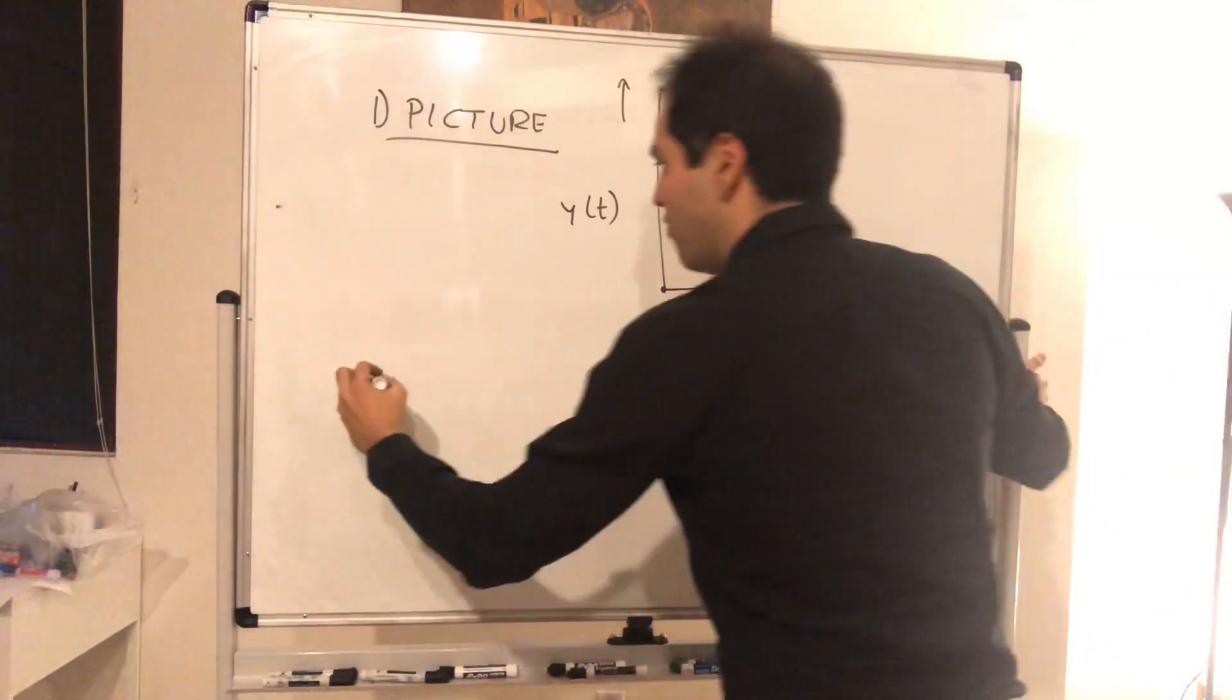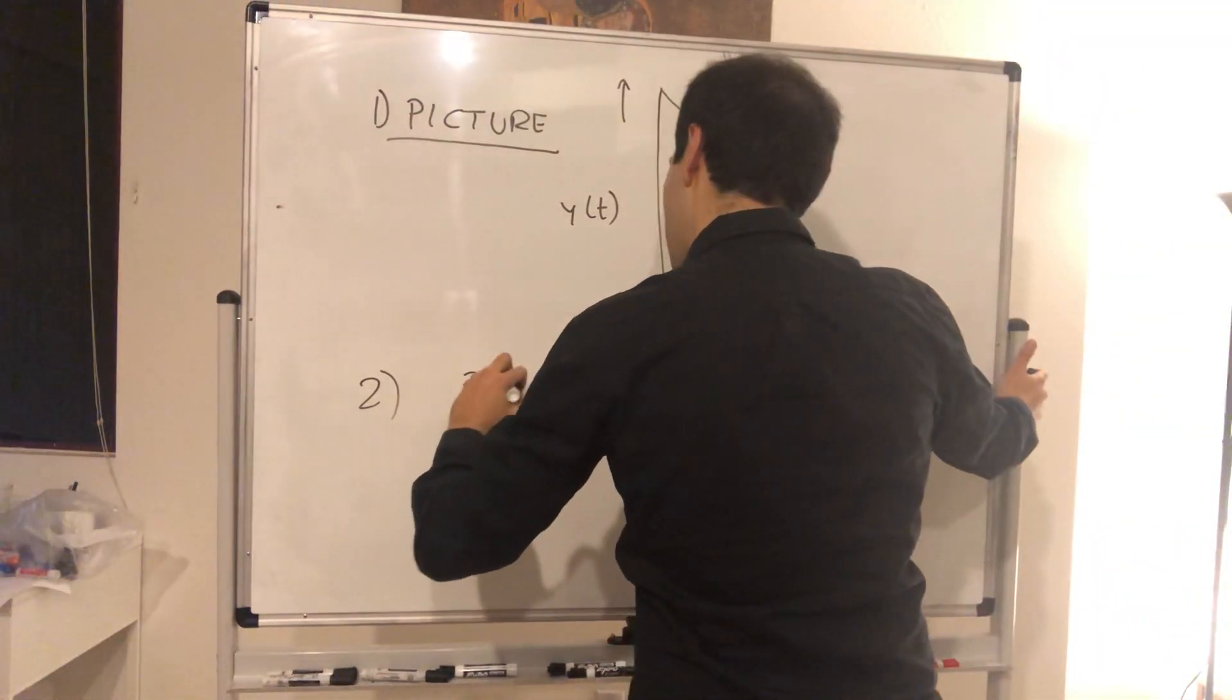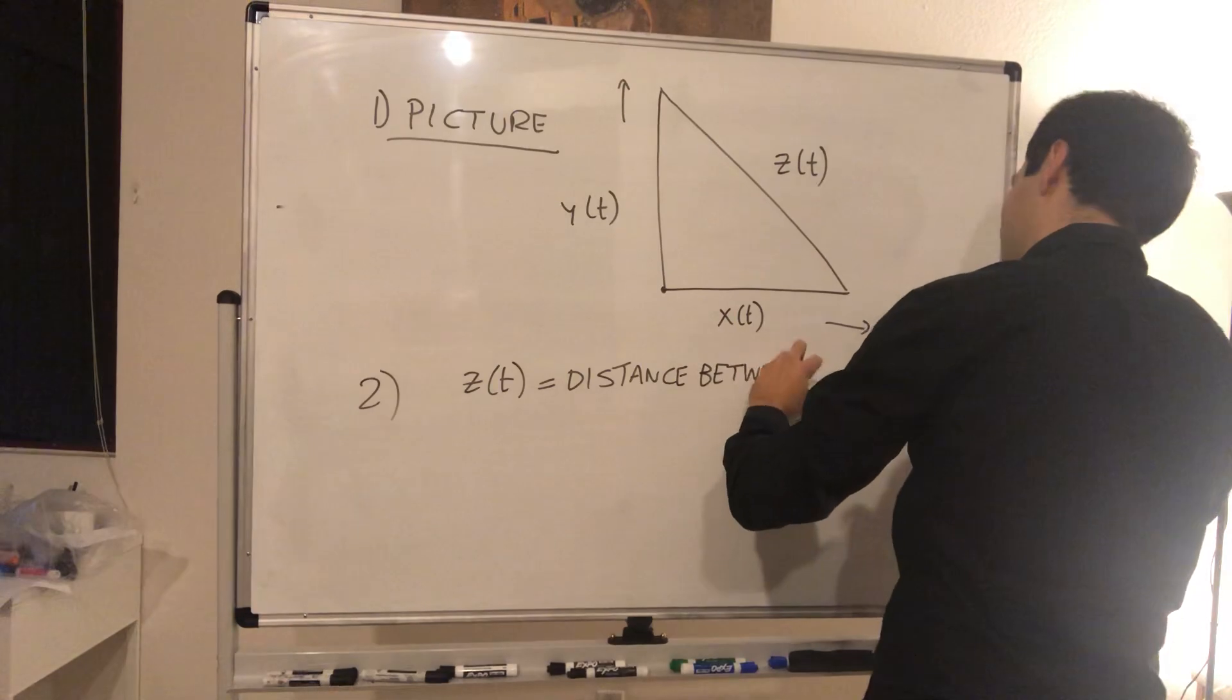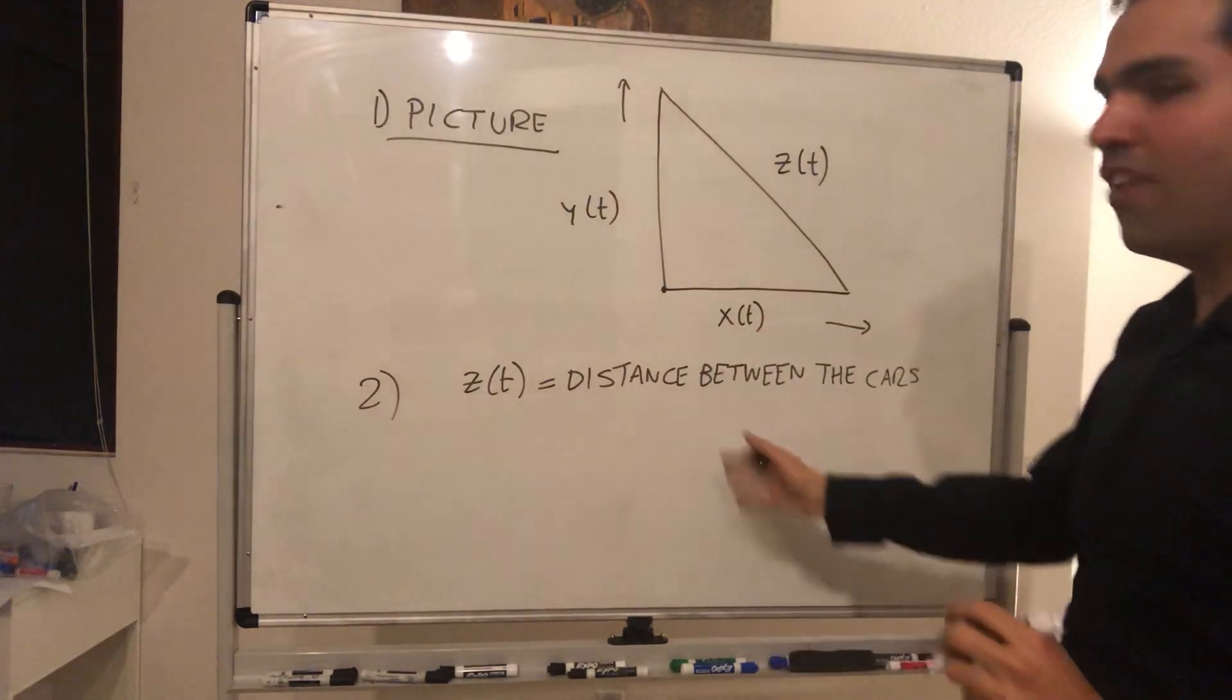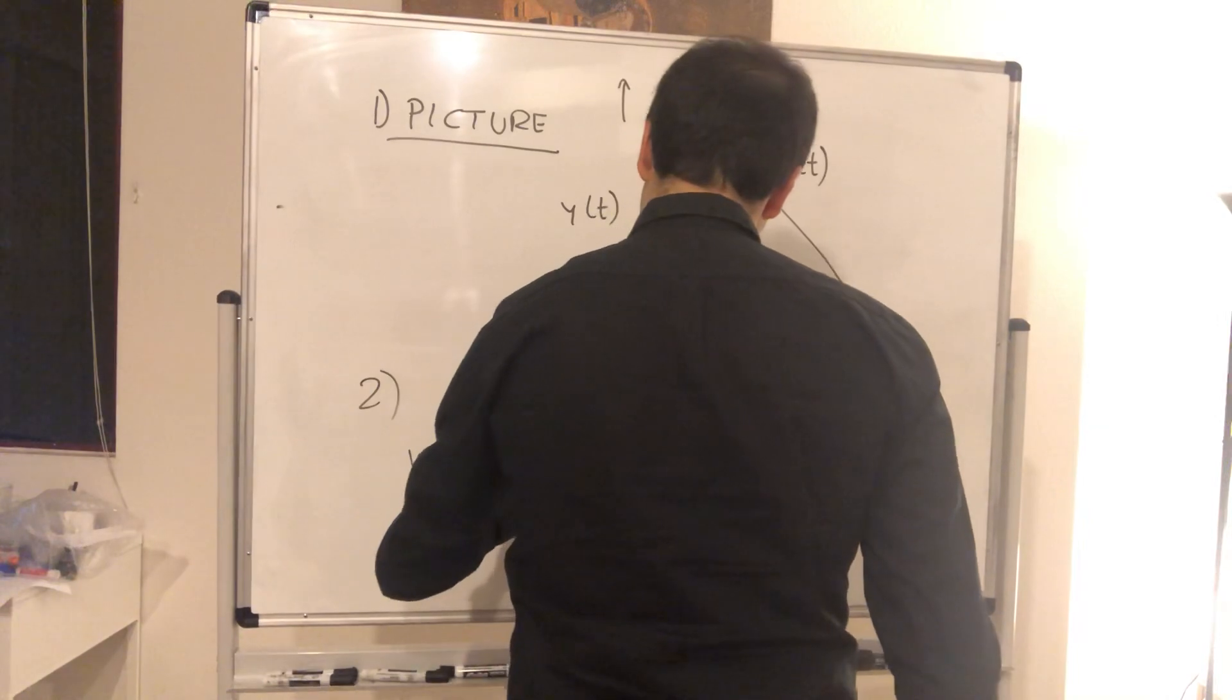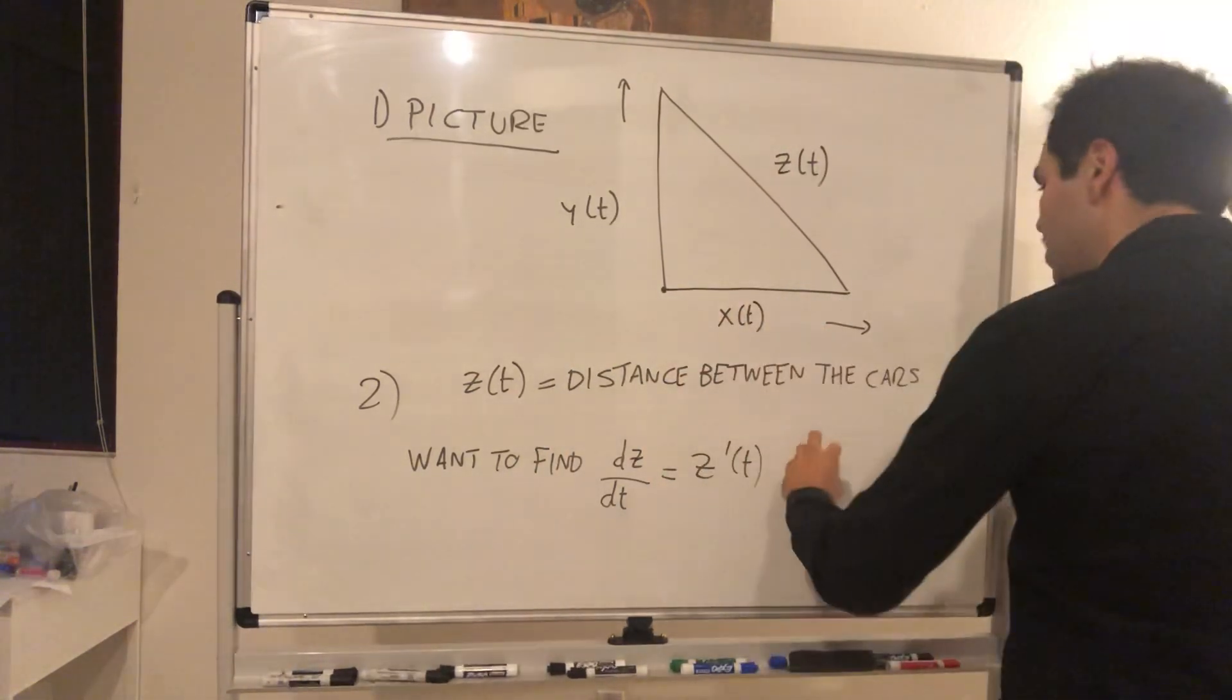Then the question is what do we want to find? Well, we want to find how the distance is changing. So let z of t be the distance between the two cars. And what we want to find, we want to find how z is changing after two hours, so we want to find in other words dz over dt, which is just z prime of t at t equals two hours.